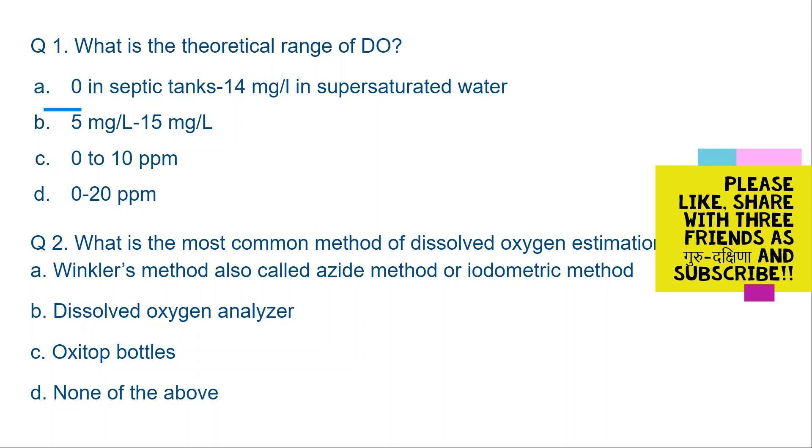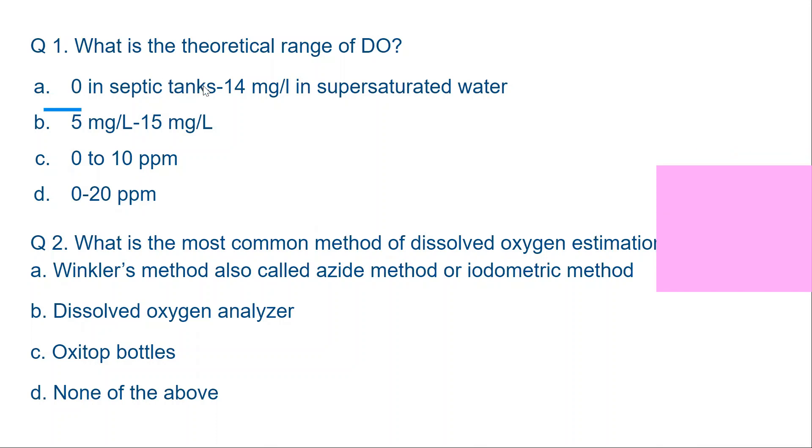Question number 1. What is the theoretical range of DO, that is dissolved oxygen? 0 in septic tanks till 14 mg per liter in supersaturated water, 5 mg per liter to 15 mg per liter, 0 to 10 ppm, or 0 to 20 ppm.